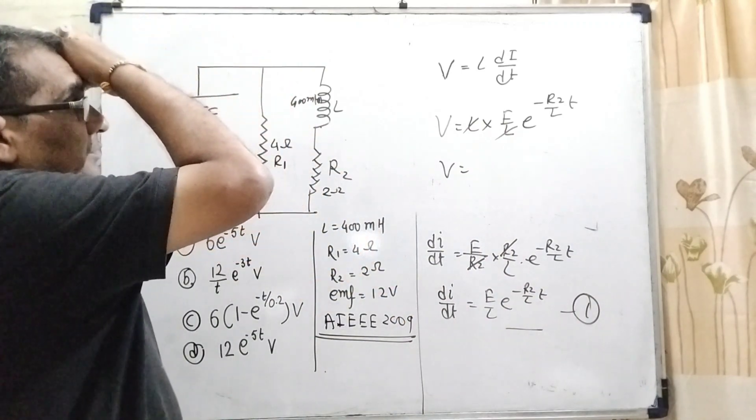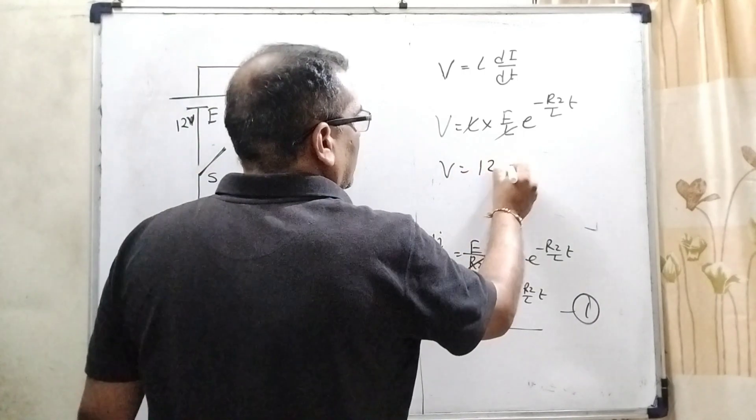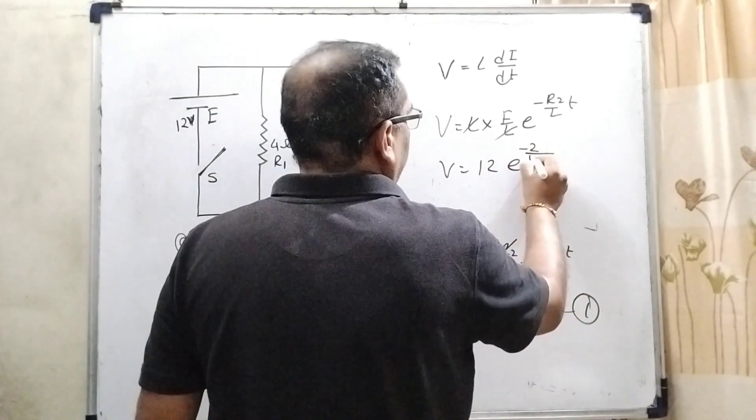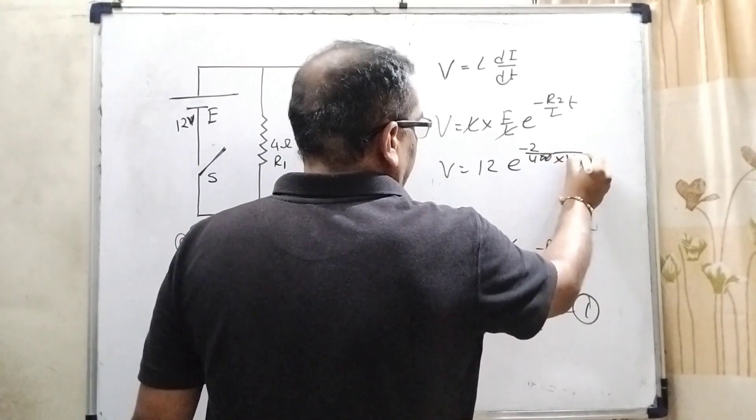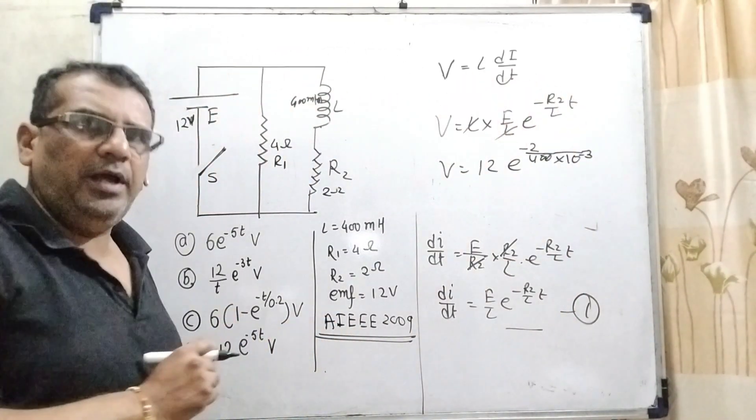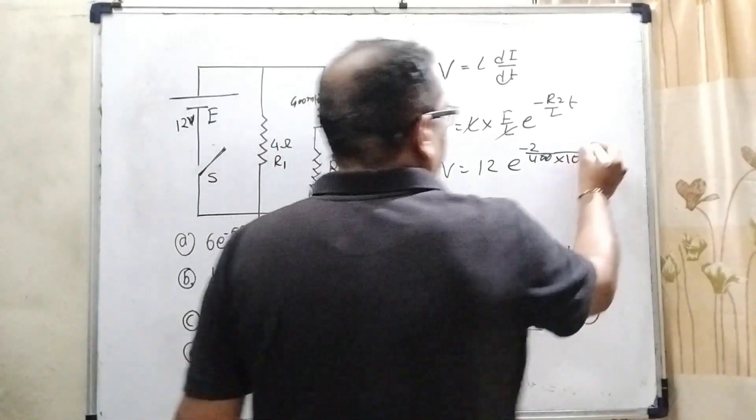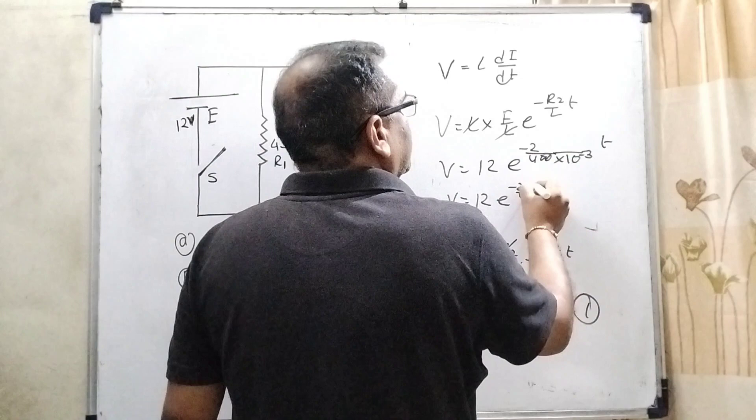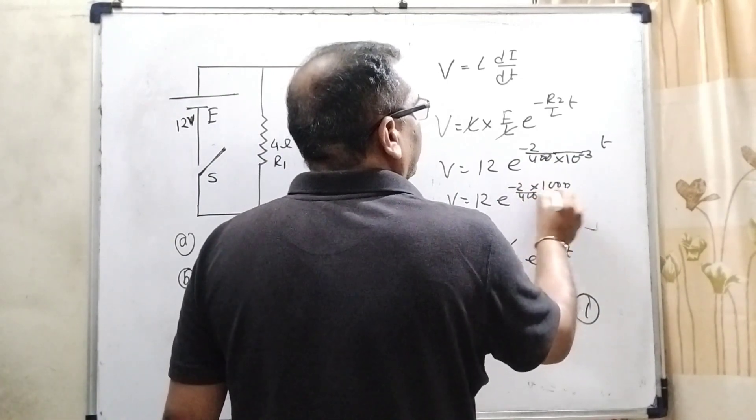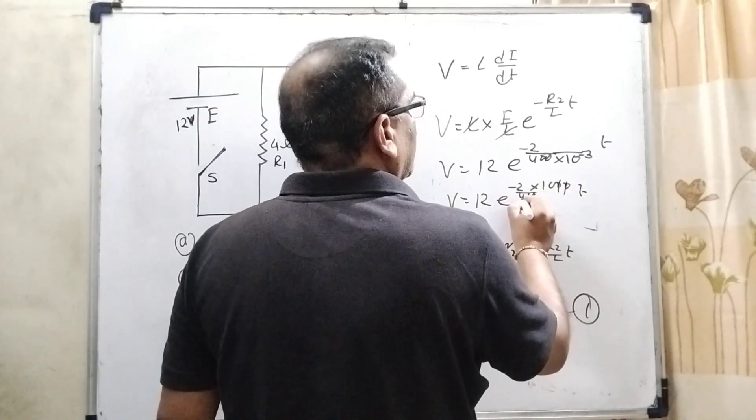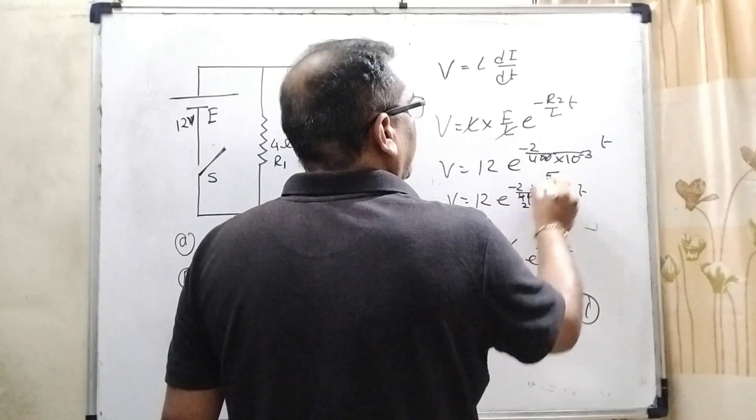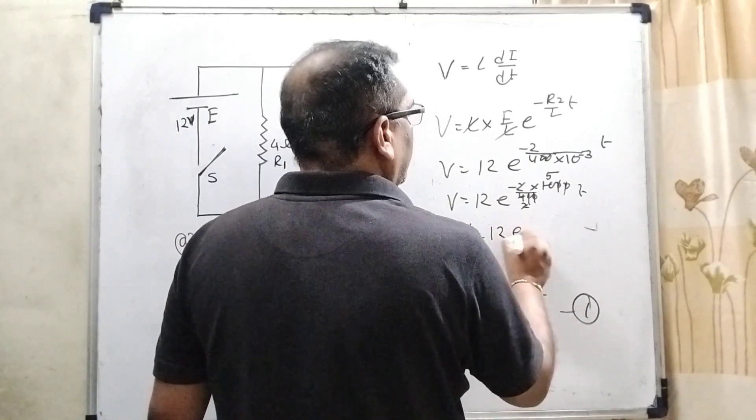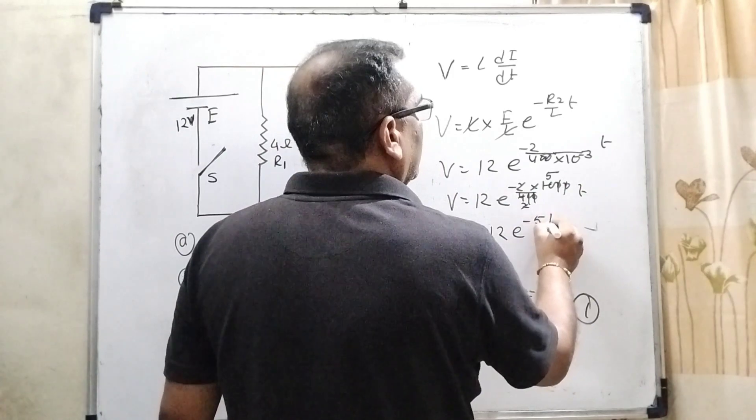Here potential of the battery is given 12 volt, and R2 is given as 2, and L is given 400 milli, which means 10 raised to power minus 3. Convert into Henry. So V equal to 12 E raised to power minus 2 upon 400 times 10 raised to power minus 3, which at the numerator becomes 10 raised to power 3, means 1000 into T. Canceling out, we get potential equal to 12 E raised to power minus 5T.